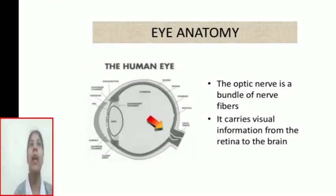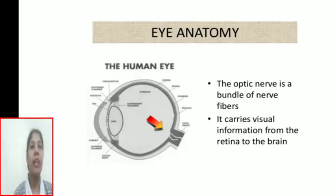Now, anatomy of the eye. The optic nerve is a bundle of nerve fibers that carries visual information from the retina to the brain.